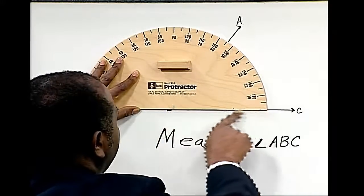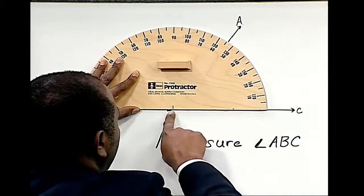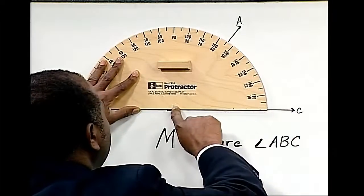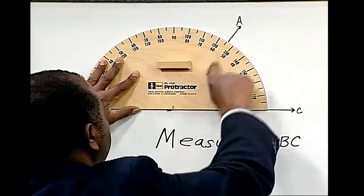We align the bottom of the protractor on ray BC. We read for the solution on ray BA.